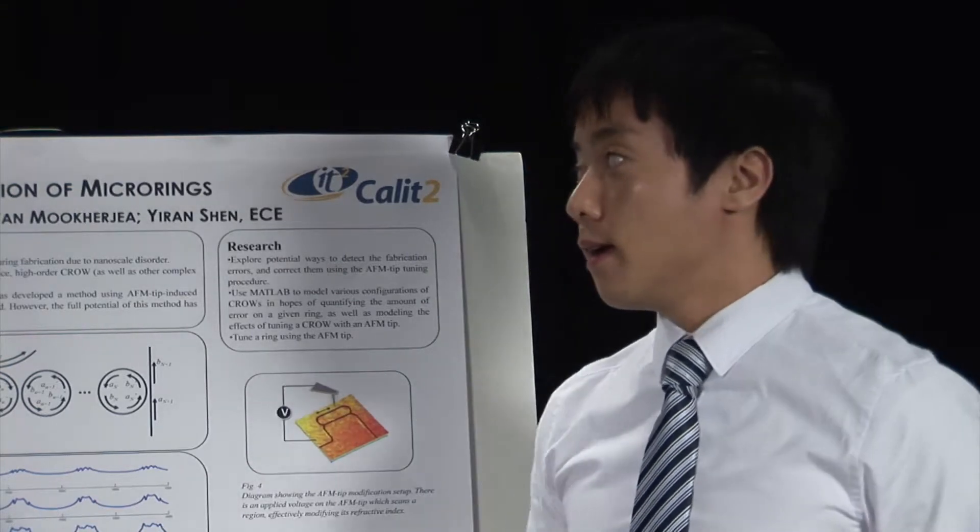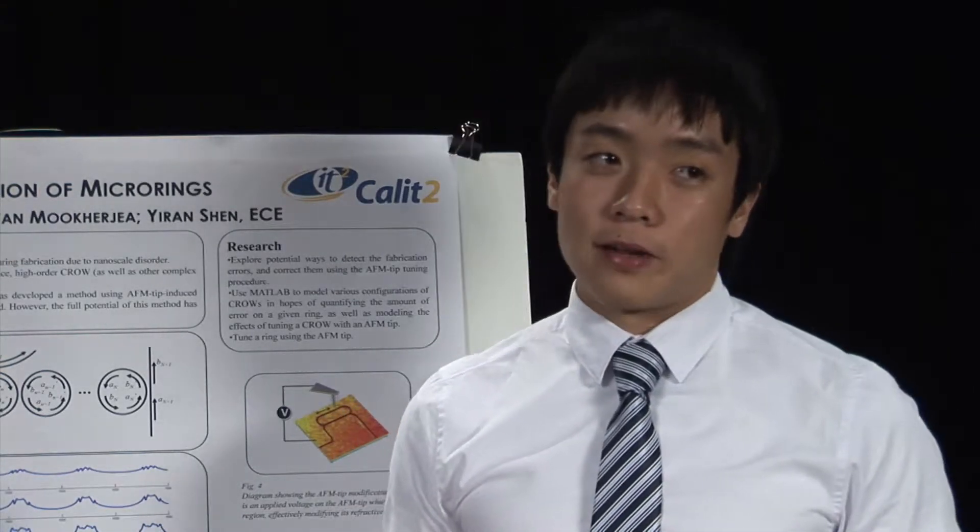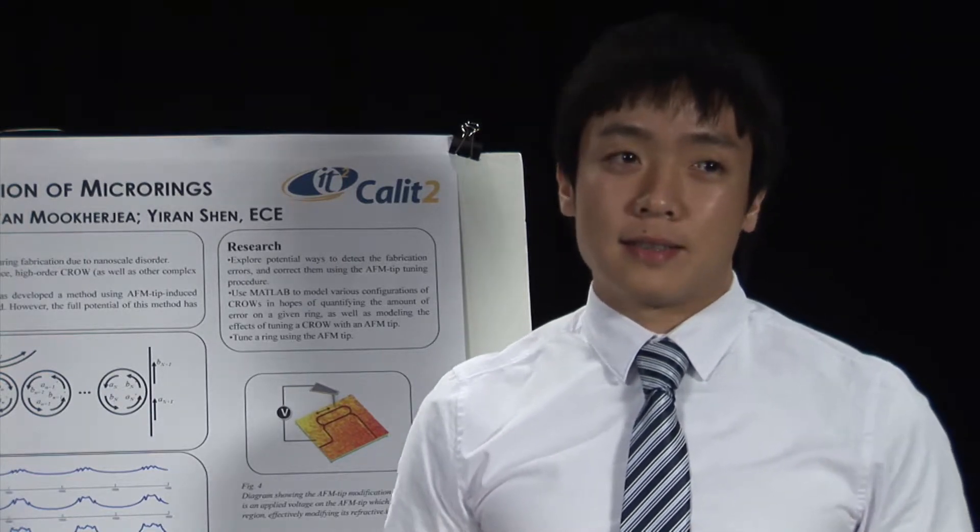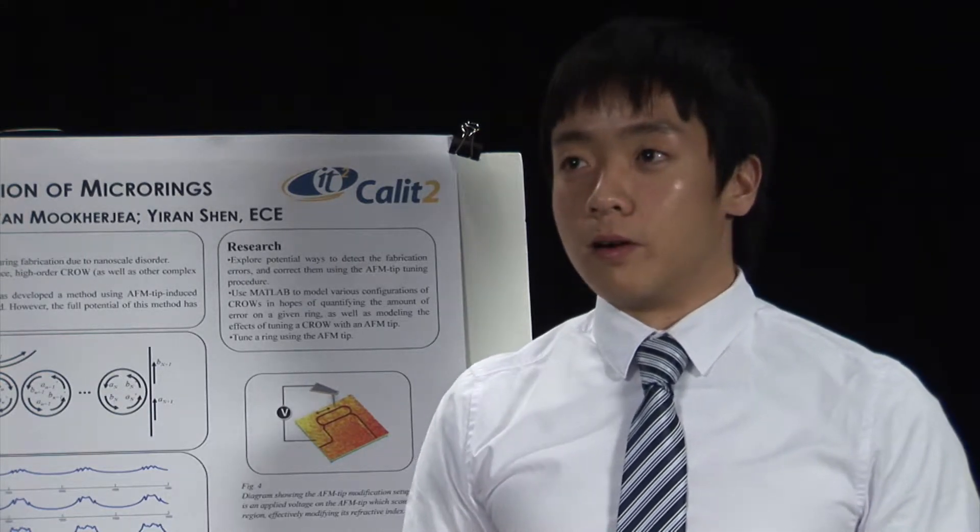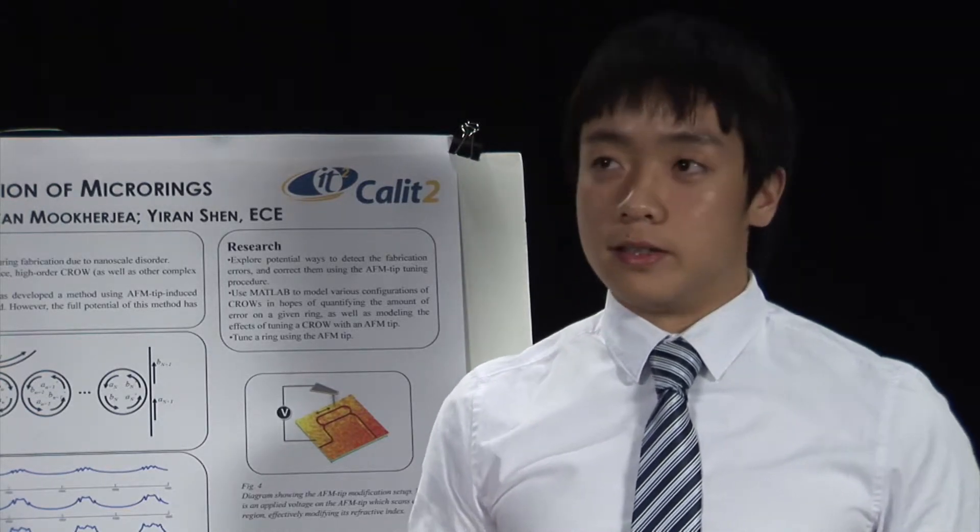The problem though is that there arise many uncontrollable defects due to nanoscale disorder during the fabrication of these devices. So if we fabricate some rings, some might be shorter, some might be longer in length. And this causes a lot of problems for very complex devices such as CROWs. So just one ring that's off can lead to the entire CROW not working correctly.